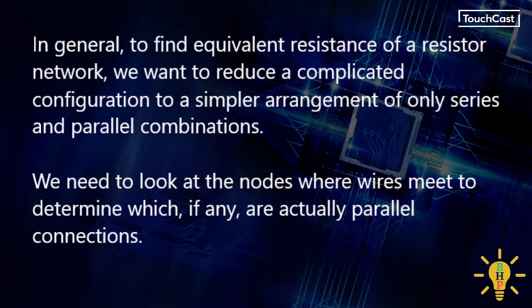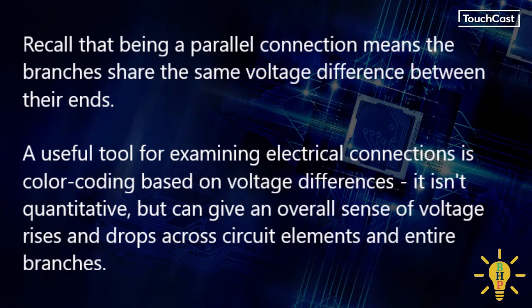In general, to find equivalent resistance of a resistor network, we want to reduce a complicated configuration of resistors to a simpler arrangement of only series and parallel combinations. To do that, we need to look at the nodes where the wires meet to determine which, if any, are actually parallel connections. Recall that the definition of a parallel connection is one where the branches share the same voltage difference between their ends.